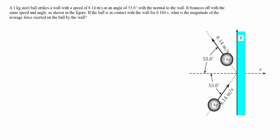This next problem is very similar except the object is moving in two dimensions. We have a one kilogram steel ball moving at 8.14 meters per second that hits a wall at an angle of 53.6 degrees with the normal line drawn to the wall. It bounces off at the same speed and same angle, and the ball is in contact with the wall for 0.184 seconds. We want to find the average force exerted on the ball by the wall.